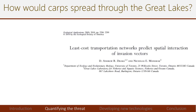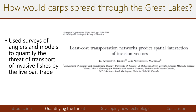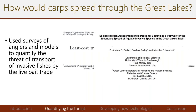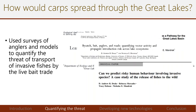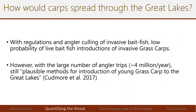Another vector of introduction studied by Andrew Drake and Nick Mandrak is the live bait trade. Using both angler surveys and models to quantify the threat of transport, they found that even with regulations and anglers actively killing invasive bait fish, there is still a low probability of live grass carp introductions. However, with close to 4 million angler trips per year, this remains a plausible method for introducing young grass carp to the Great Lakes.